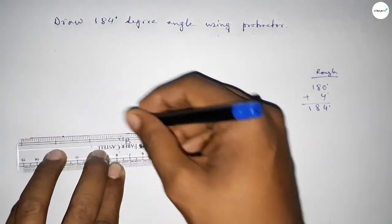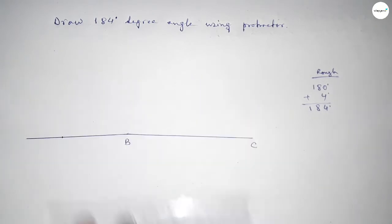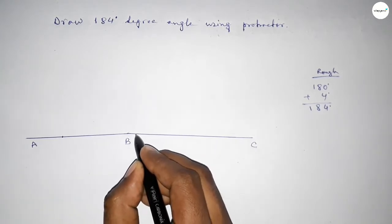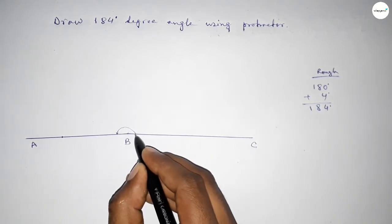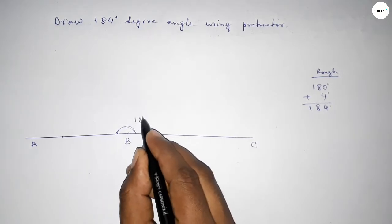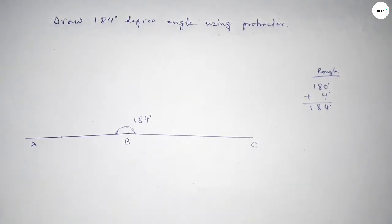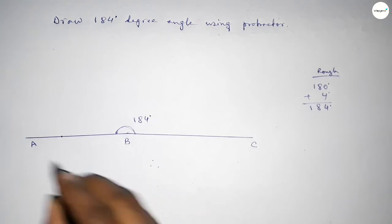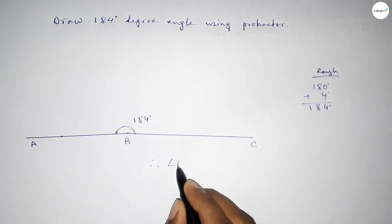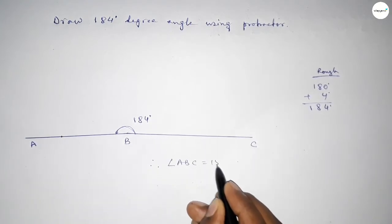Taking here point A. So angle ABC, up to this, angle ABC equals 184-degree angle.